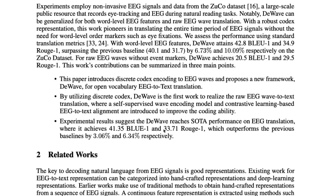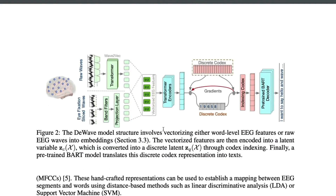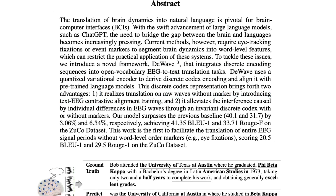Contrastive alignment training is very similar to what stable diffusion uses. You have both modalities — one is text, the other is the waves (similar to how stable diffusion has text and image). You use a contrastive approach where the model learns from what is matching and what is not, so it knows 'this wave means this word, this wave means this word.' They've done a similar thing here with EEG.